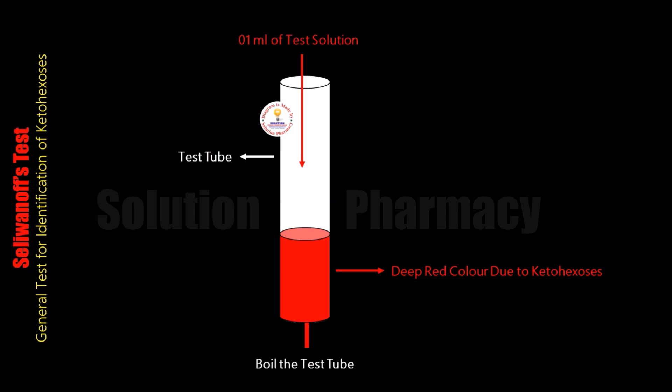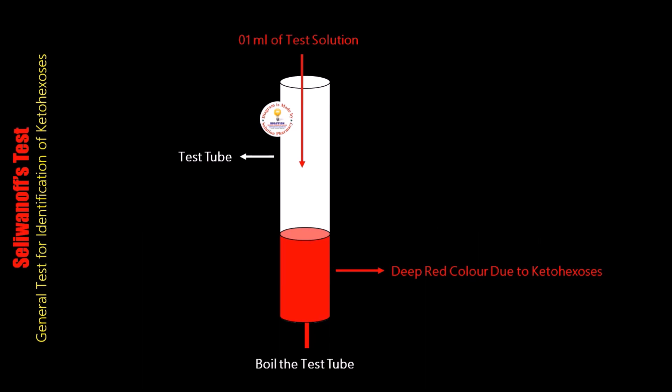This furfural derivative then condenses with the resorcinol present in the reagent to form a red color complex within 2 minutes, which is why a deep red color solution is observed in the test tube. However, aldo-hexoses react very slowly with resorcinol to form the same red color complex. This is how we can distinguish aldose sugar from keto sugar. Aldose sugar is the sugar in which the functional group present is an aldehyde, whereas ketose is the type of carbohydrate in which the functional group is a ketone.